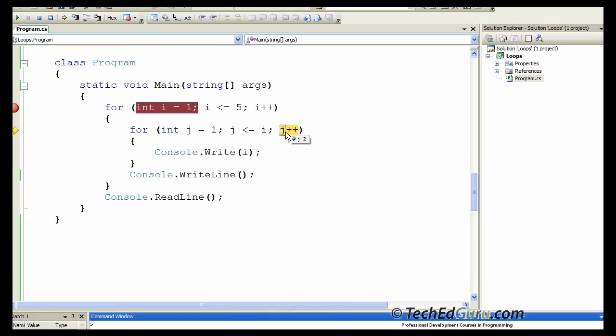In this case j is going to become now 3 which is bigger than i. So that loop is going to be terminated. And now it is going to pick up the next value of i and so forth.